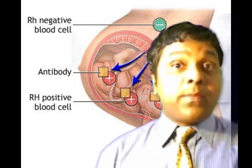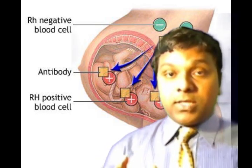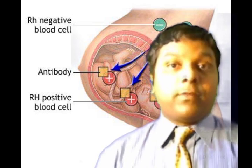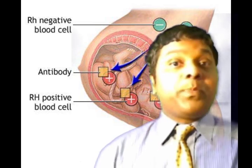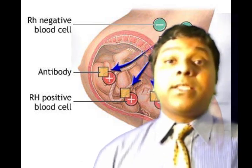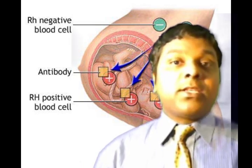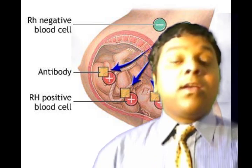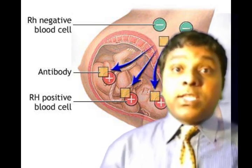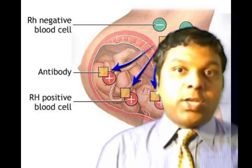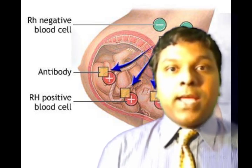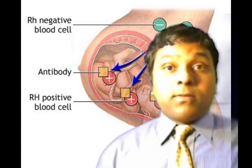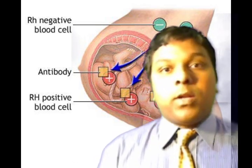RhIg should generally be given within 72 hours. It has been shown to be effective in preventing isoimmunization even if given up to 28 days after delivery. If the antibody screen is positive, the patient is managed as sensitized during the next pregnancy. Special anti-RH immunoglobulin is given at 28 weeks gestation and within 72 hours after delivery, miscarriage, ectopic pregnancy, or abortion — this prevents formation of antibodies that might affect future infants. In women who are already producing antibodies, there is no benefit to using RhIg.